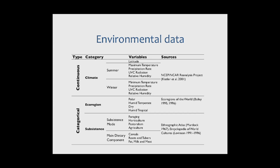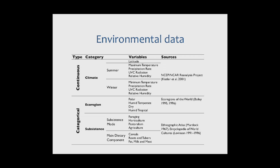With regard to the environment, we use a set of environmental variables broadly classified into three categories: climate variables, which are all continuous; and ecoregion and subsistence variables, which are categorical and analyzed as dichotomous variables. Climate variables were chosen among those most likely to reflect the impact of cold stress, heat stress, and different degrees of UV radiation on human physiology. Subsistence variables are further subdivided into mode of subsistence — foraging, horticulture, pastoralism, and advanced agriculture — and main dietary components: cereals, roots and tubers, fat, milk, and meat.